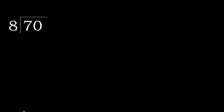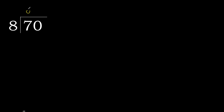70 divided by 8. 7 is less, therefore next. 70 is not less, therefore work with 70. 8 multiplied by which number is nearest to 70 but not greater — 8 multiplied by 9 is 72, which is greater. Multiply by 8: 64 is not greater. Subtract — remainder is 6.